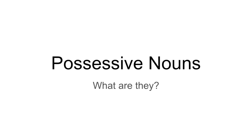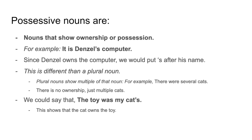But possessive — does anybody know what that means? If you possess something, what does that mean? Possessive nouns are nouns that show ownership or possession. This is different than a plural noun. Plural nouns show multiple of that noun — for example, there were several cats. There is no ownership, just multiple cats. So when we are doing possessive nouns, we are showing ownership, not saying there's more than one of something. The apostrophe S is only for possessive nouns.